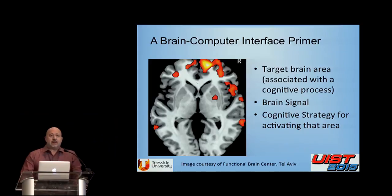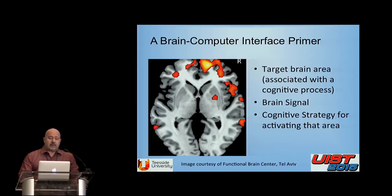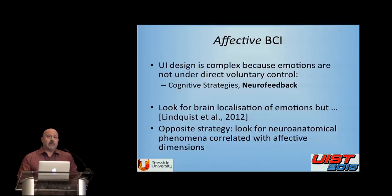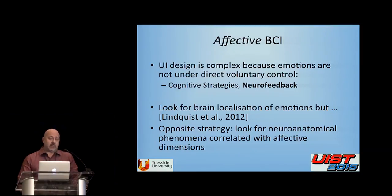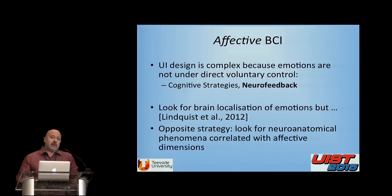That's easier said than done. For motor areas which are under volitional control, that's not a major difficulty, but for affective brain-computer interfaces there is a challenge. By nature it's difficult to control your emotions, and the entire user interface design is made more complex because of that. Generally this is addressed by working on the cognitive strategies that subjects can use to express emotions, and also on the interface paradigm itself.